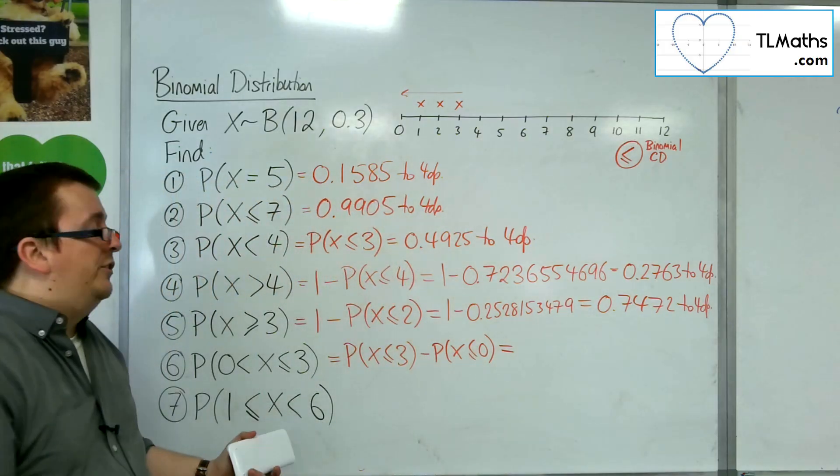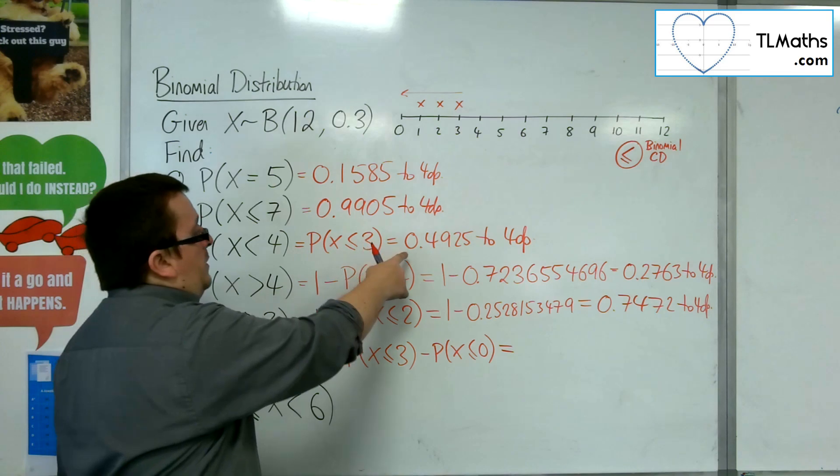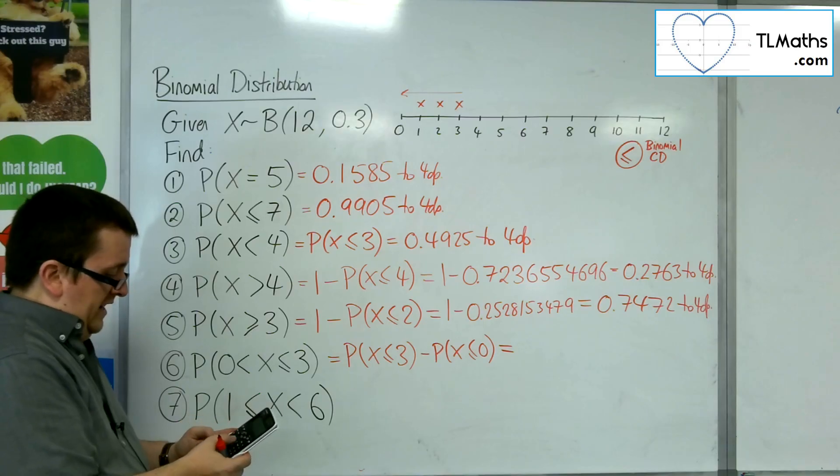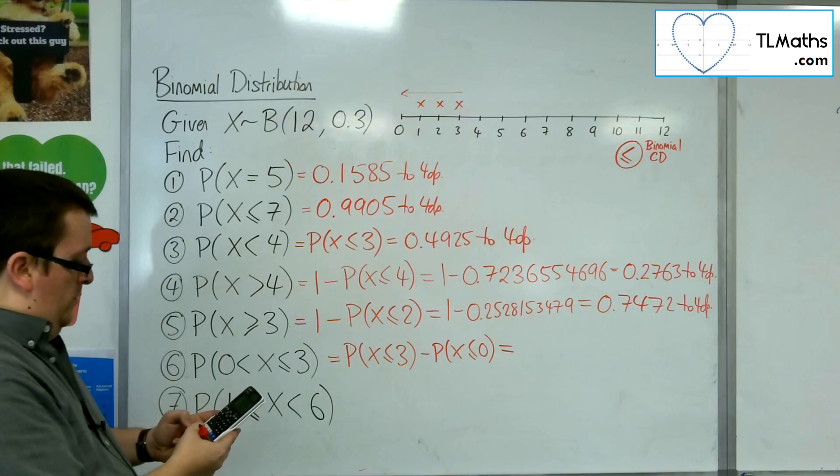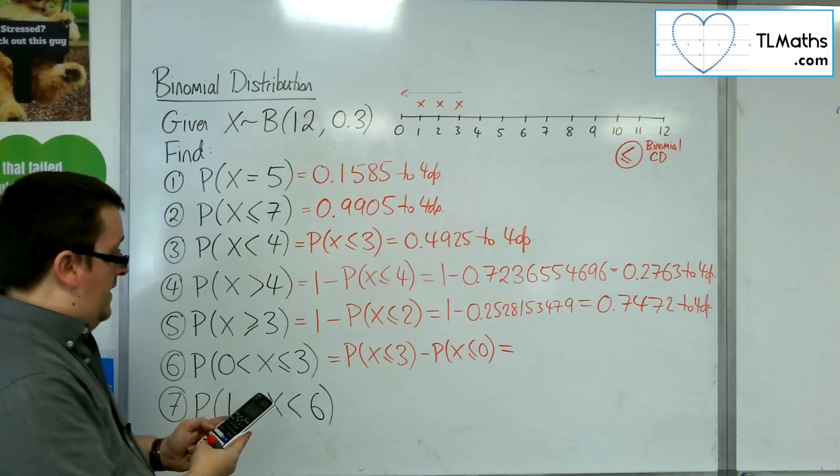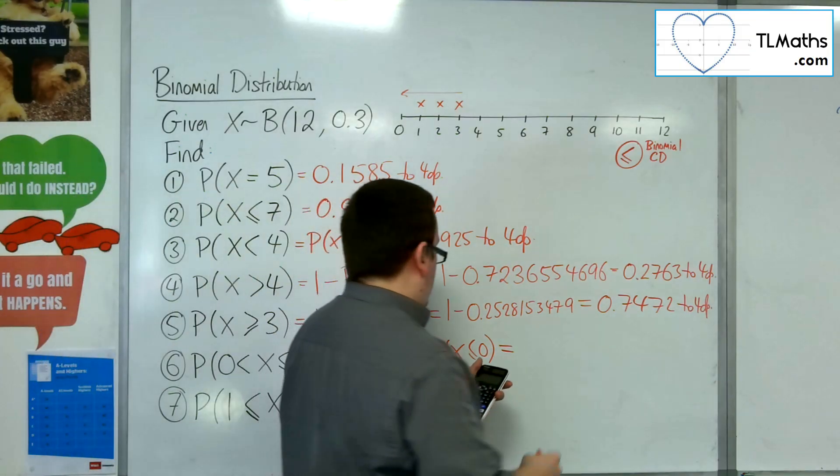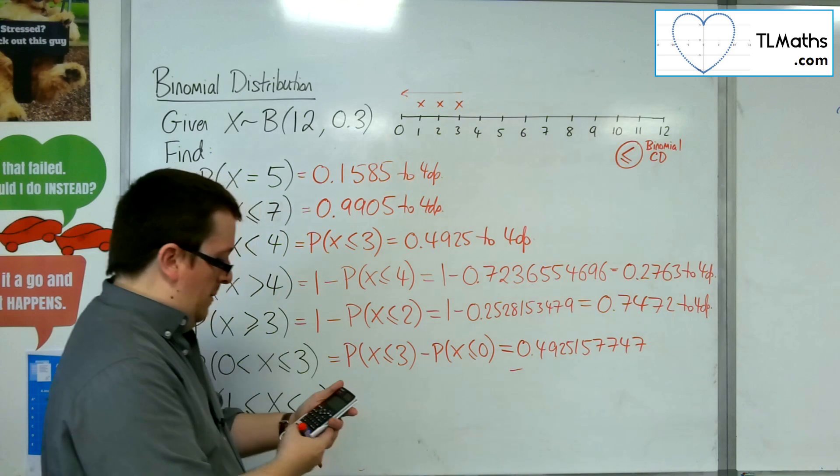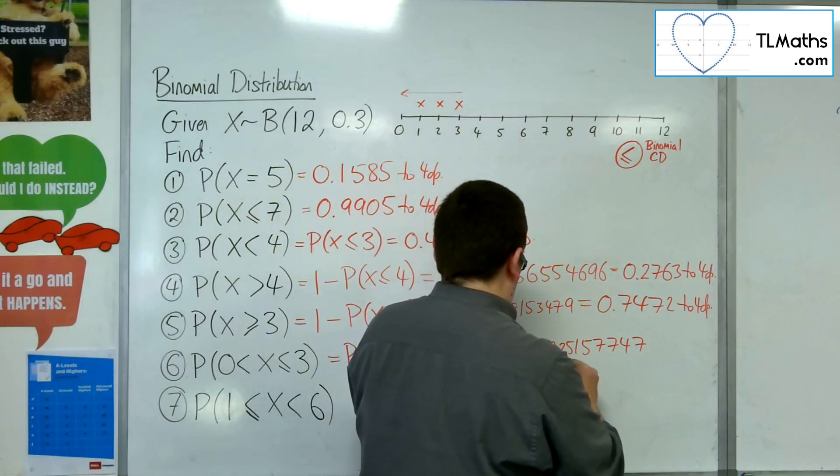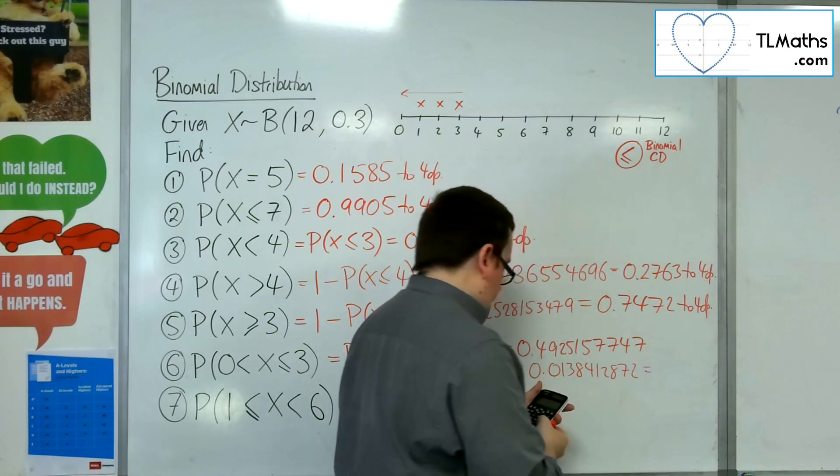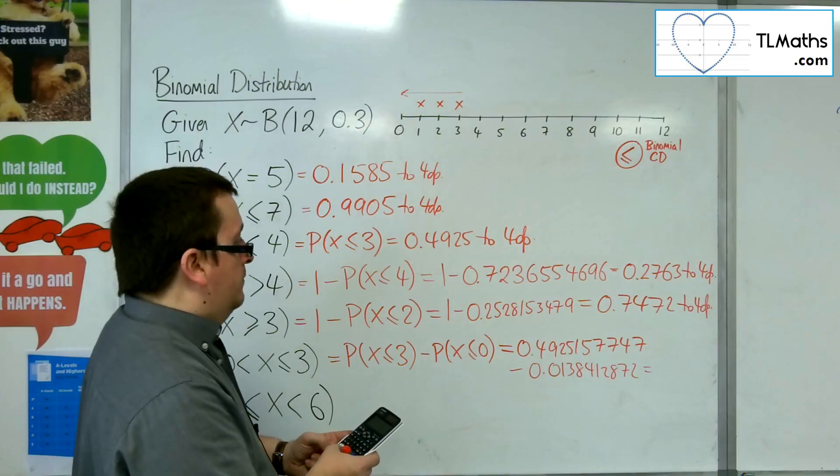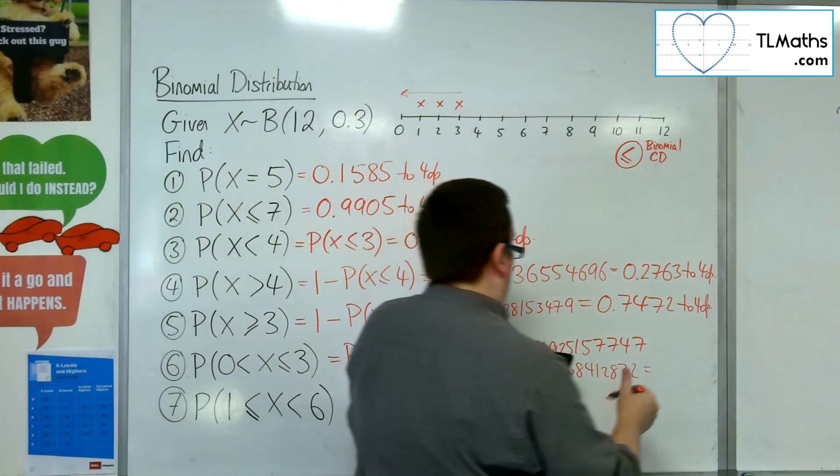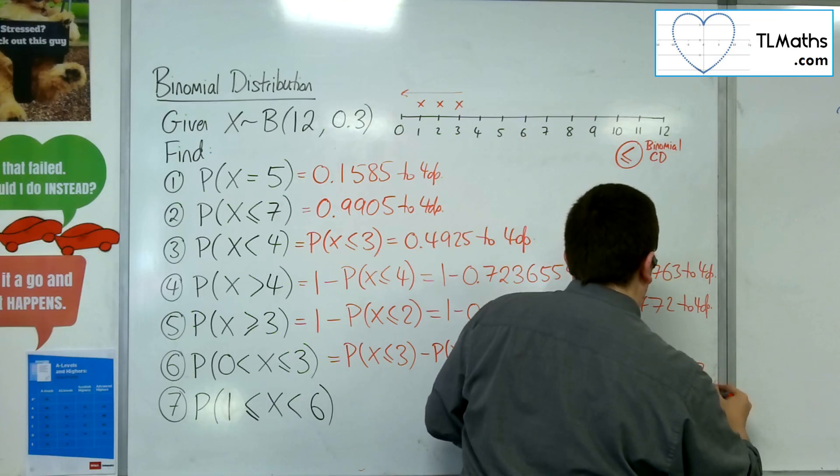Now, x is less than or equal to 0 is just the same as x equaling 0. So, we've got the less than or equal to 3 up here. So, I really want to get it to four decimal places. I'm going to need one more decimal place. So, if we go back in. So, variable 3 and then 12 and 0.3. We'll get the 0.4925157747. Then, take away the probability of 0 is 0.0138412872. So, 0.47872 to four decimal places.